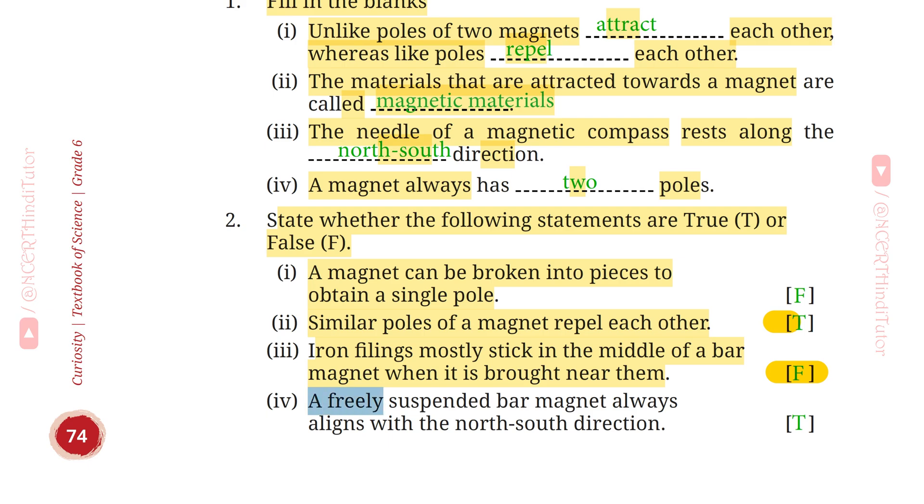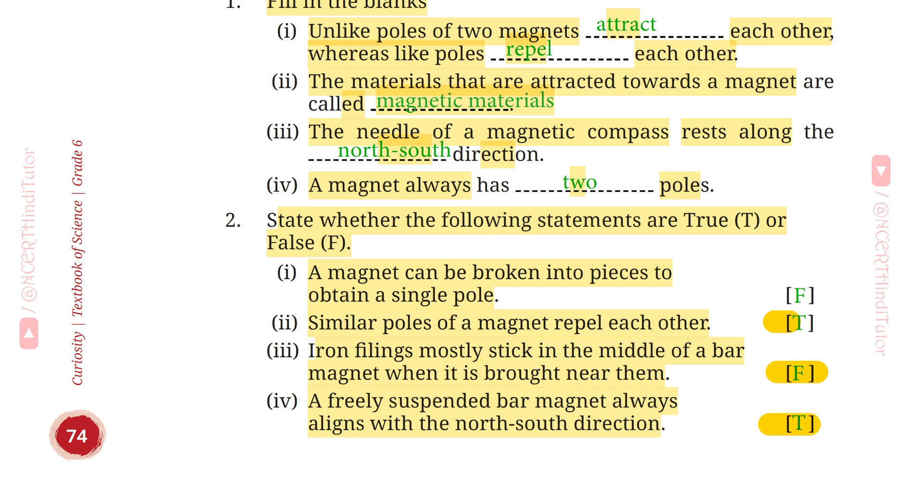Fourth, a freely suspended bar magnet always aligns with the north-south direction. This is true. Question 3: Column 1 shows different positions in which one pole of a magnet is placed near that of the other. Column 2 indicates the resulting interaction between them for different situations. Fill in the Blanks.